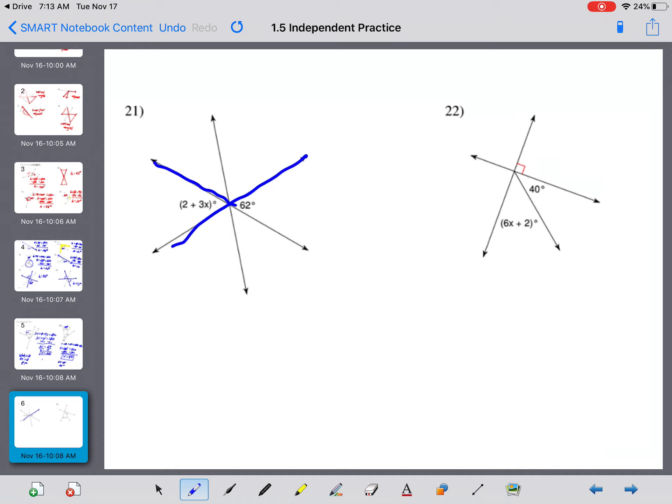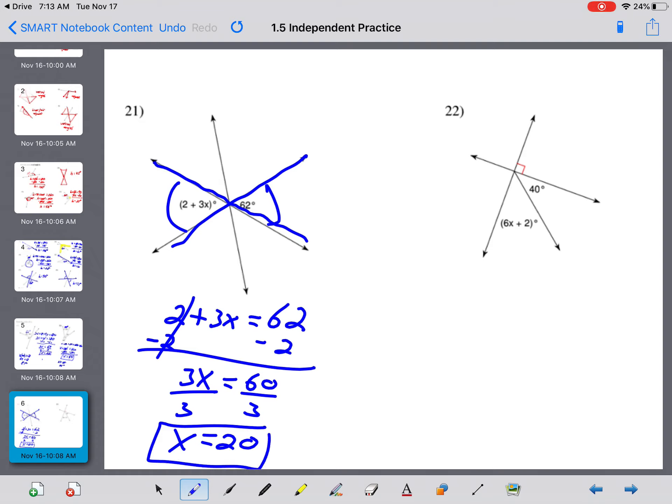Here we have vertical angles again, which means we know they are congruent. So 2 plus 3x equals 62 minus 2 on both sides. 3x equals 60. Divide by 3 on both sides. x equals 20. Plug that in. 2 plus 3 times 20 is 2 plus 60, which is 62.